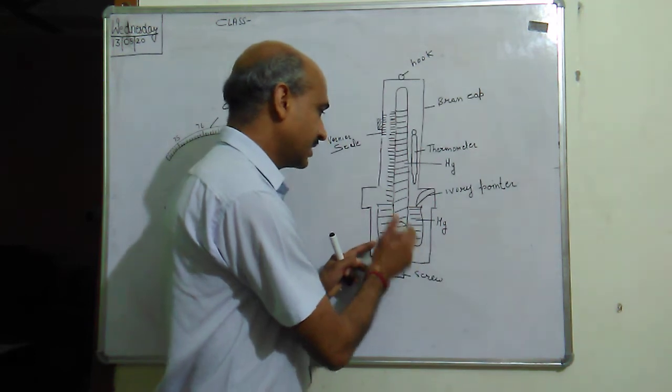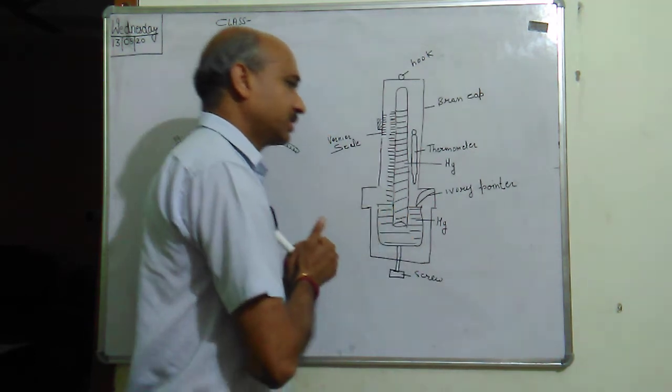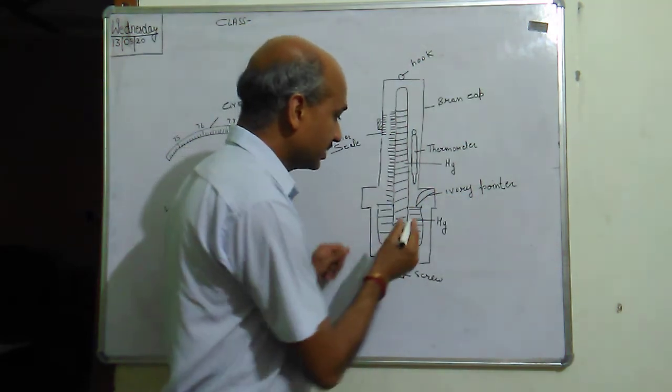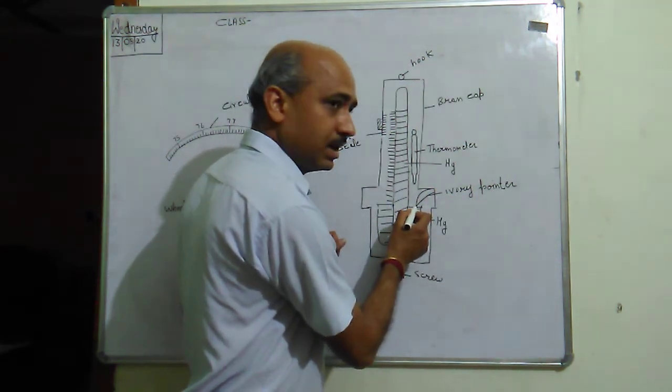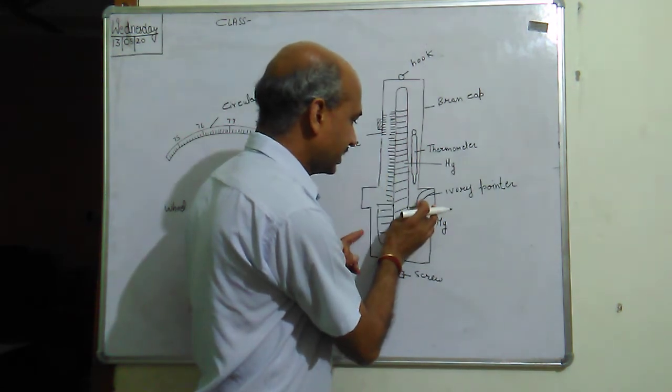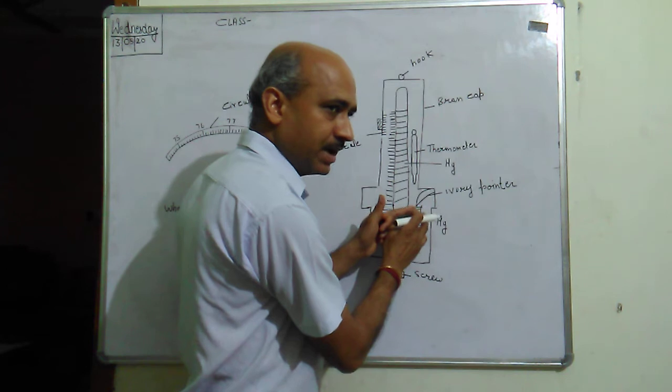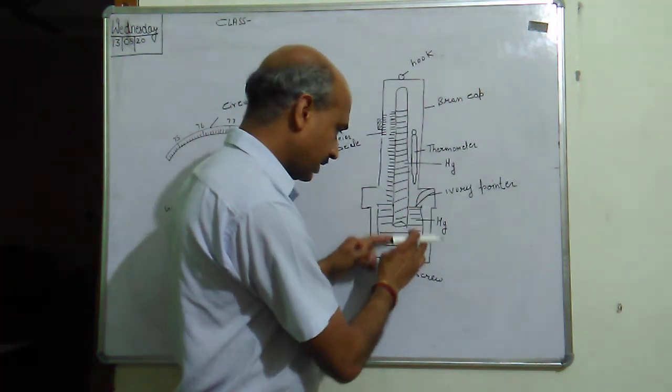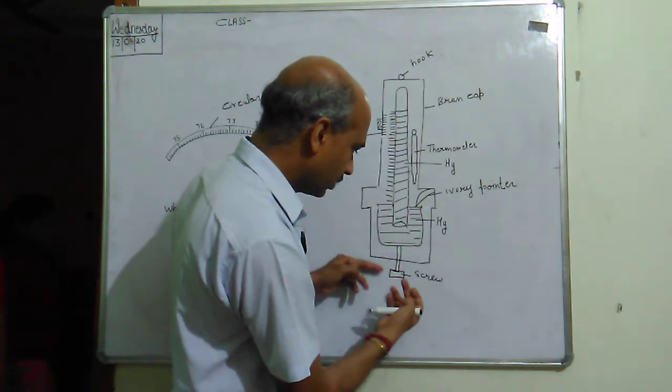Then we have this ivory point. What does the ivory point do? The ivory point just touches the surface when we are taking the reading, so that the mercury doesn't dip. If it dips, we can adjust using the screw.